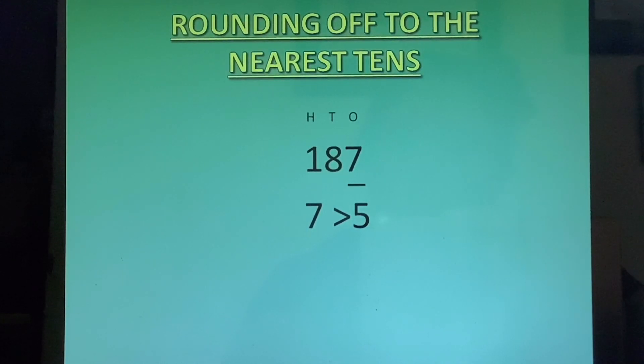Now 7 is greater than 5. So we will increase the tens place by 1. 8 will become 9. And ones place we will write 0. So the number will be 190. So 190 is the answer when we round off 187 to the nearest tens.